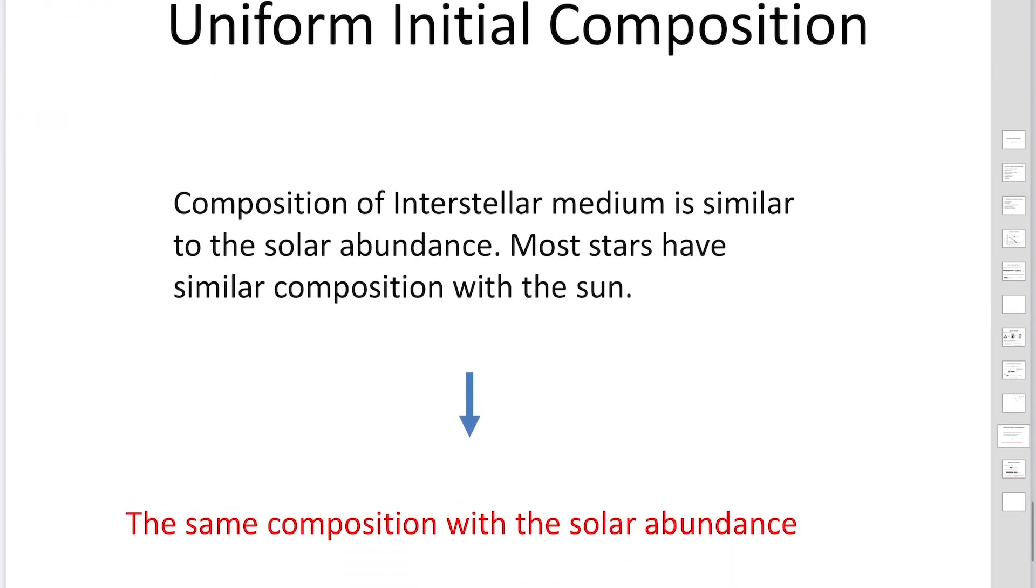The second assumption is uniform initial composition. We assume the composition of the interstellar medium, the medium between stars, is very similar to solar abundance. Most stars have similar composition with solar composition. We assume the same composition with solar abundance as the initial composition. All stars have the same composition with our sun.